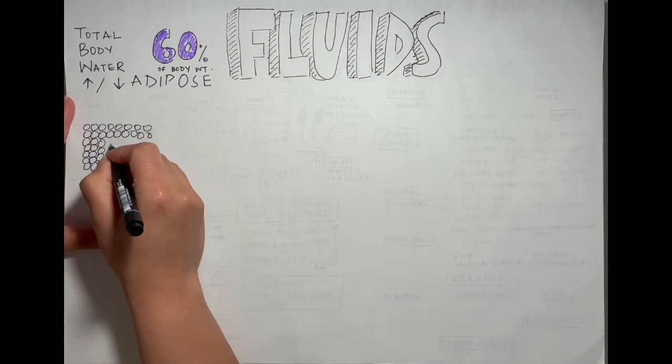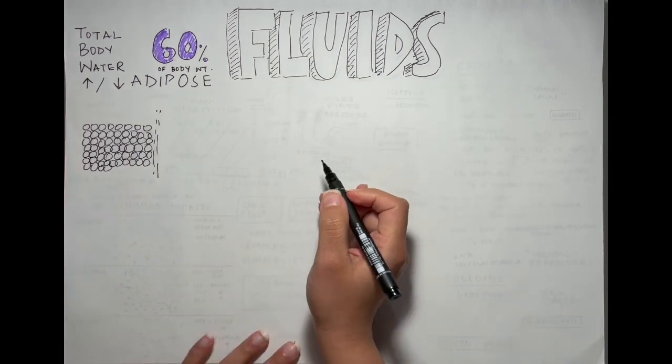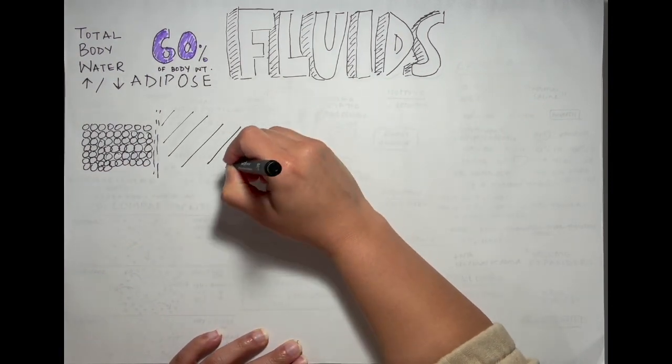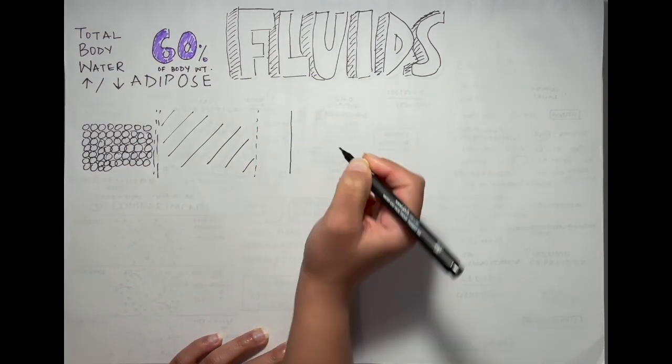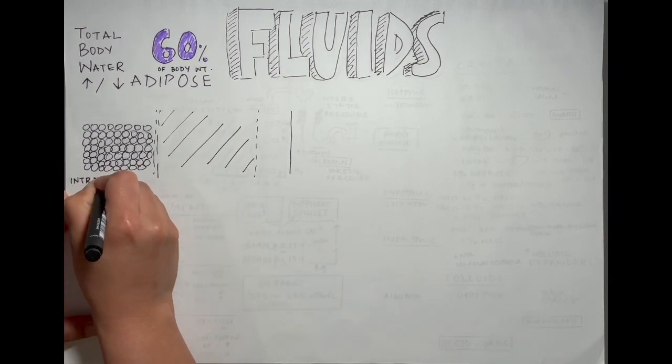There's a few compartments in our body that contain fluid and one of them is the intracellular compartment. Cells are really tiny but all together they contain majority of the water in our body, up to 40% out of the 60.